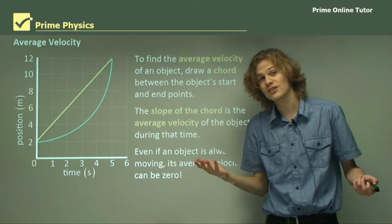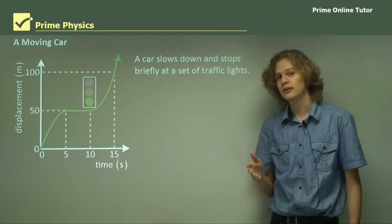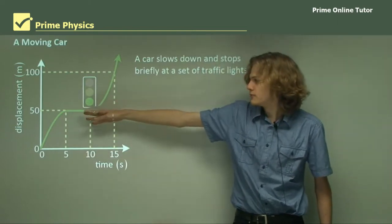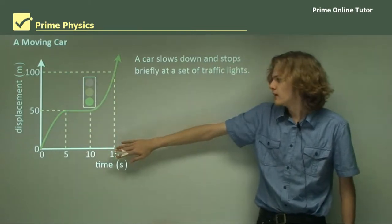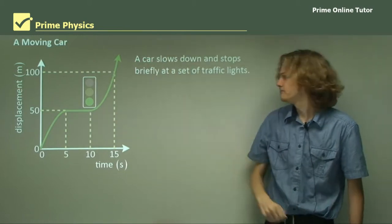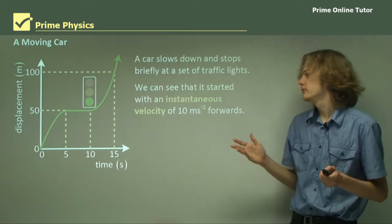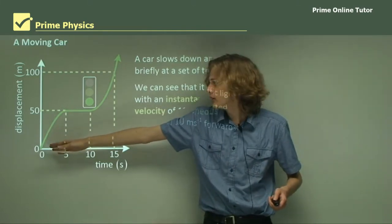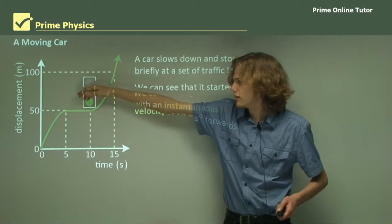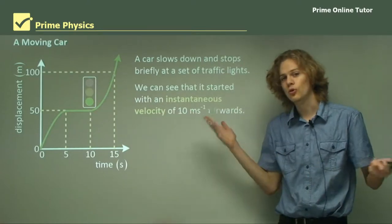Let's take a look at an example. Here we have a displacement time graph of a car stopping briefly at a set of traffic lights. The car is moving forward up to about five seconds when it realizes the light is red and it stops. After 10 seconds the light goes green and the car accelerates and drives off. We can see it started with an instantaneous velocity of 10 meters per second forward — drawing a tangent at the very start gives a slope of 50 divided by five, which is 10 meters per second.